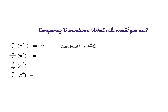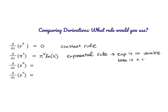Now let's look at pi to the power of x. Here we have an exponential function because the variable is in the exponent, so we use the exponential rule. That gives us pi to the power of x times the natural log of pi. We use the exponential rule because the exponent contains the variable, while the base pi is a constant — pi is not a variable like x is a variable.